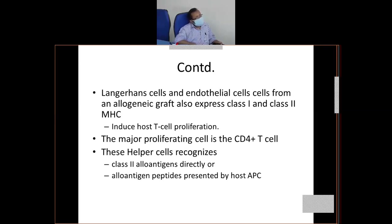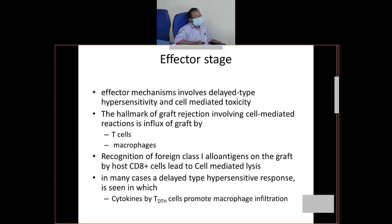Besides dendritic cells, Langerhans cells are also antigen-presenting cells, plus endothelial cells — they also express a huge amount of MHC1 and MHC2 proteins, and all can induce T cell proliferation in the recipient. In the effector phase, these activated T lymphocytes and macrophages produce massive cell lysis. CD8-mediated cell lysis occurs, then CD4 assists activation of macrophages. Both CD4, CD8, and macrophages cause massive destruction and cell lysis, and ultimately the graft is rejected from the site.